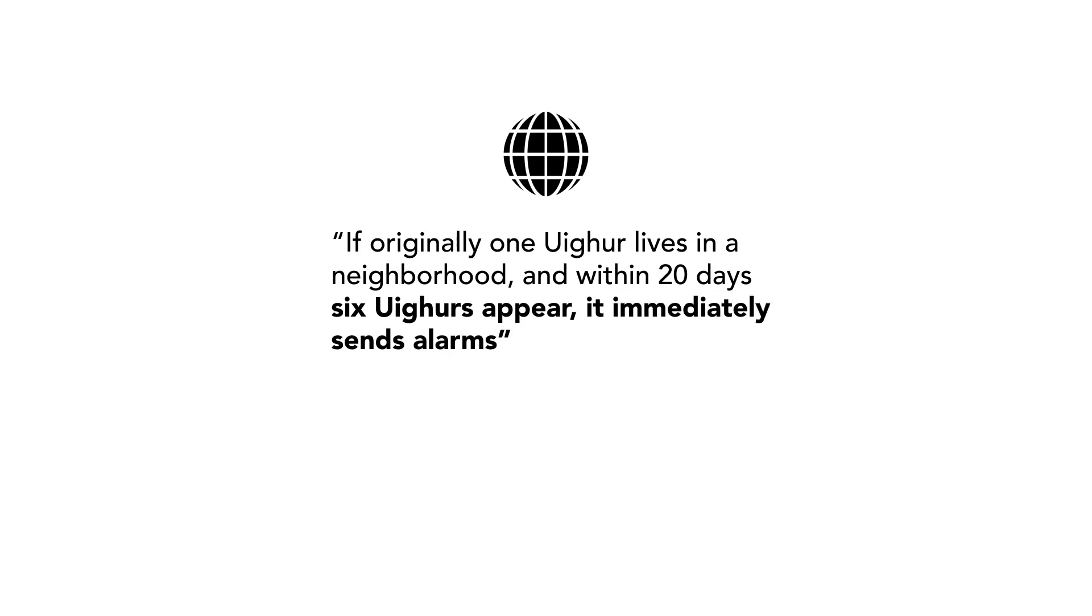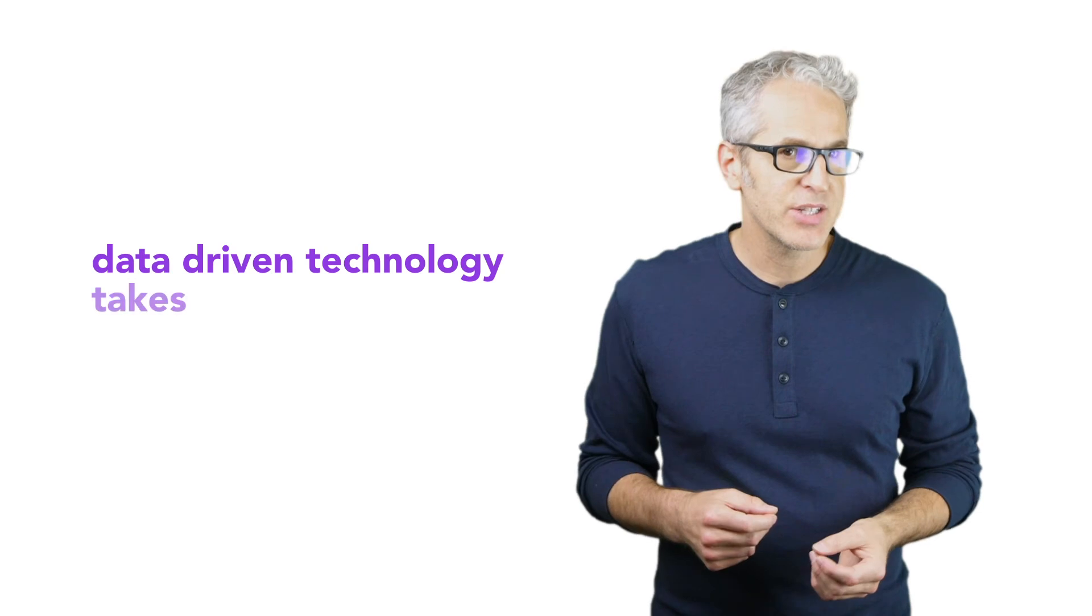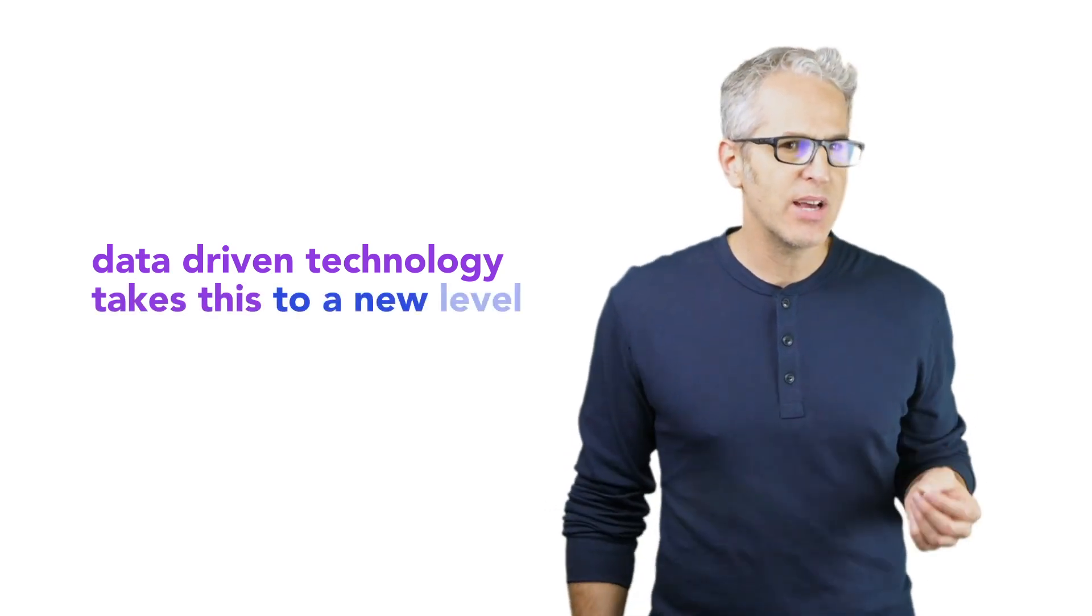Its website said: if originally one Uyghur lives in a neighborhood and within 20 days six Uyghurs appear, it immediately sends alarms to law enforcement. By implementing the differential treatment of an ethnic group in full scale, data-driven technology takes this to a new level.